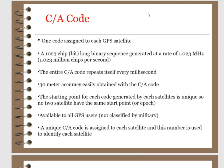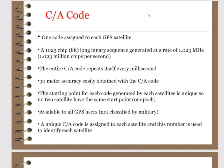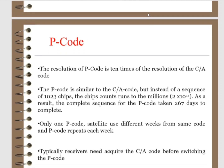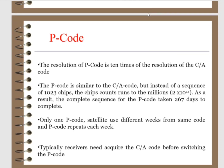Legacy CA code is broadcast on L1 only. When it comes to P code, it is a bit different. P code stands for precise code. It is a particular series of ones and zeros generated at a rate of 10.23 million bits per second, which is 10 times faster than CA code. It is carried on both L1 and L2.